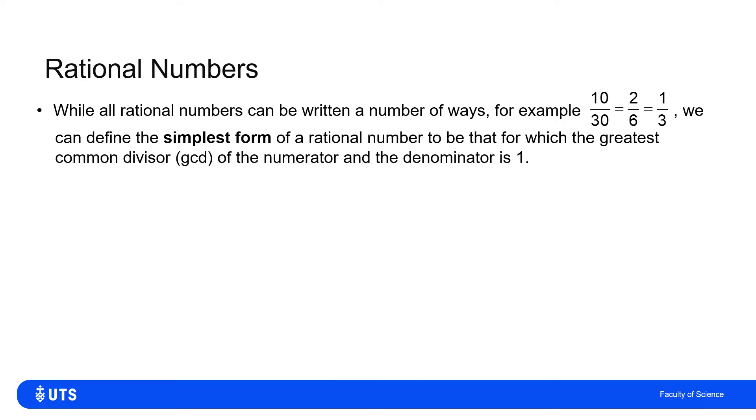But there is a simplest form, and the simplest form is when I've made sure that the top of the fraction, the numerator and the bottom of the fraction, the denominator have greatest common divisor of one. So 10 thirtieths isn't the simplest form because, for example, I can divide top and bottom by five and get down to two sixths. Two sixths isn't the simplest form. So I can divide top and bottom by two and get down to one third.